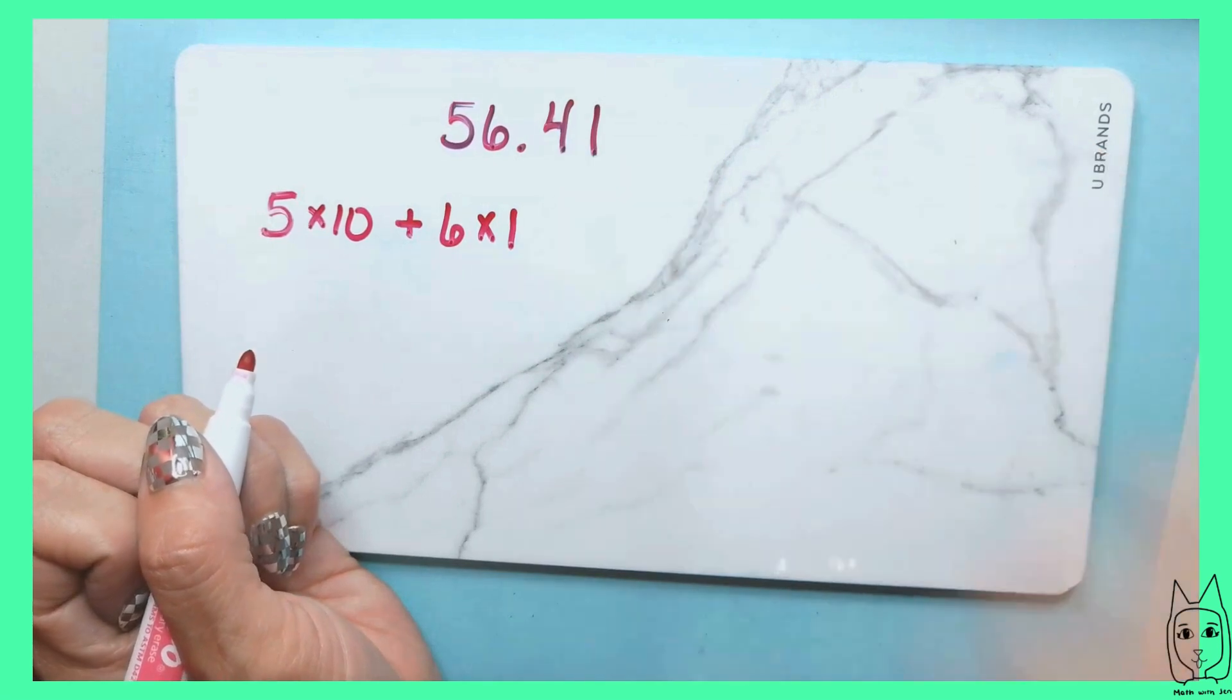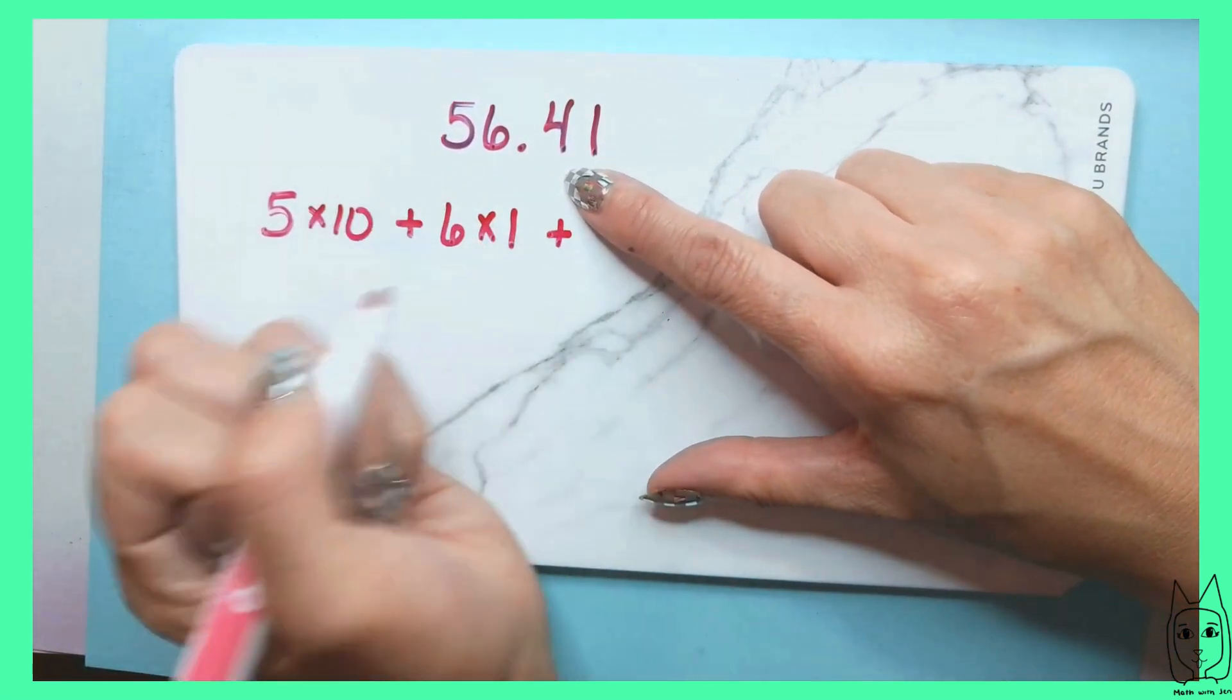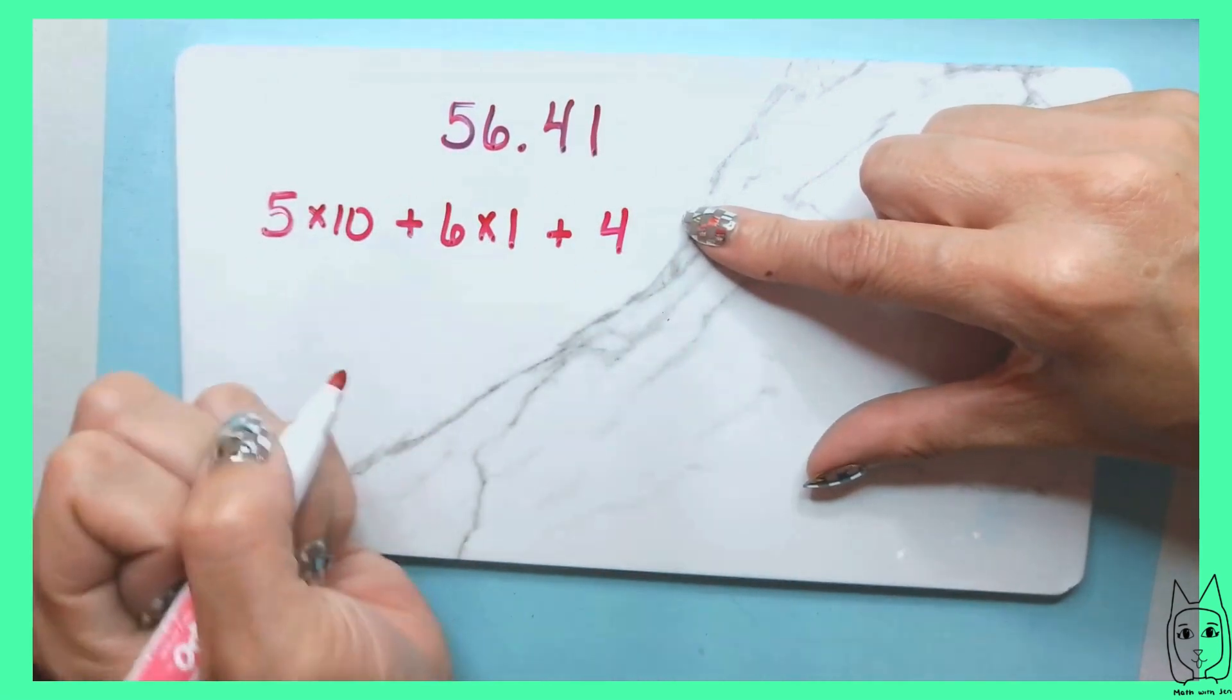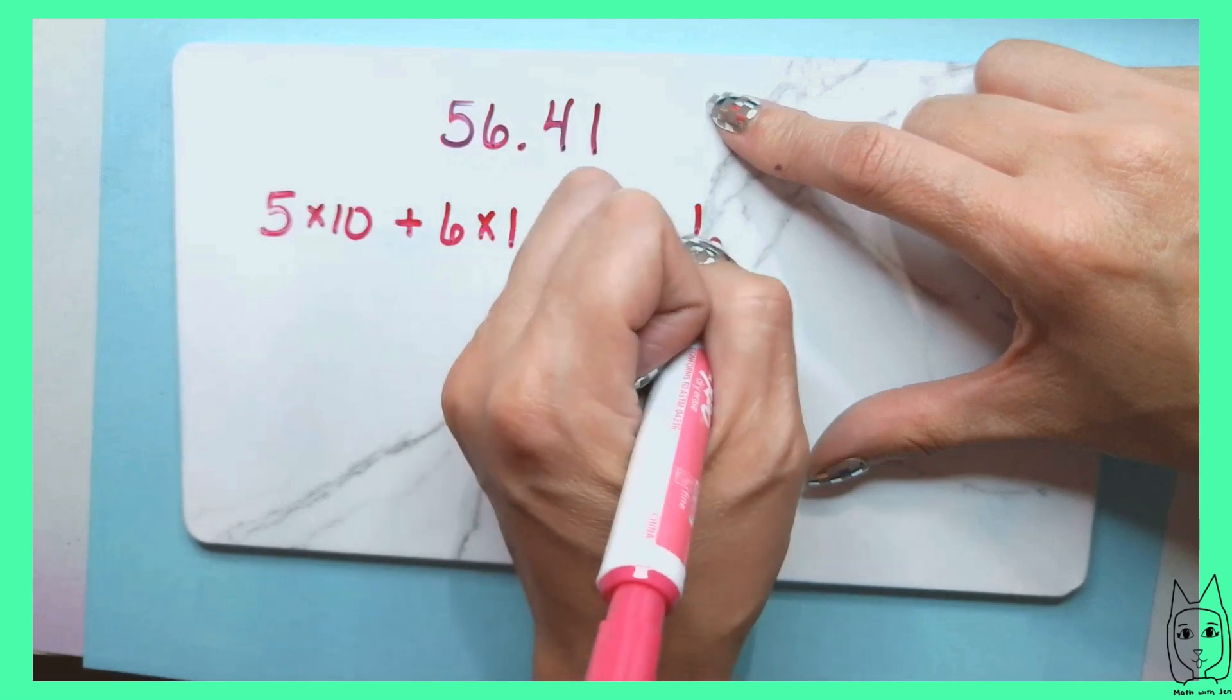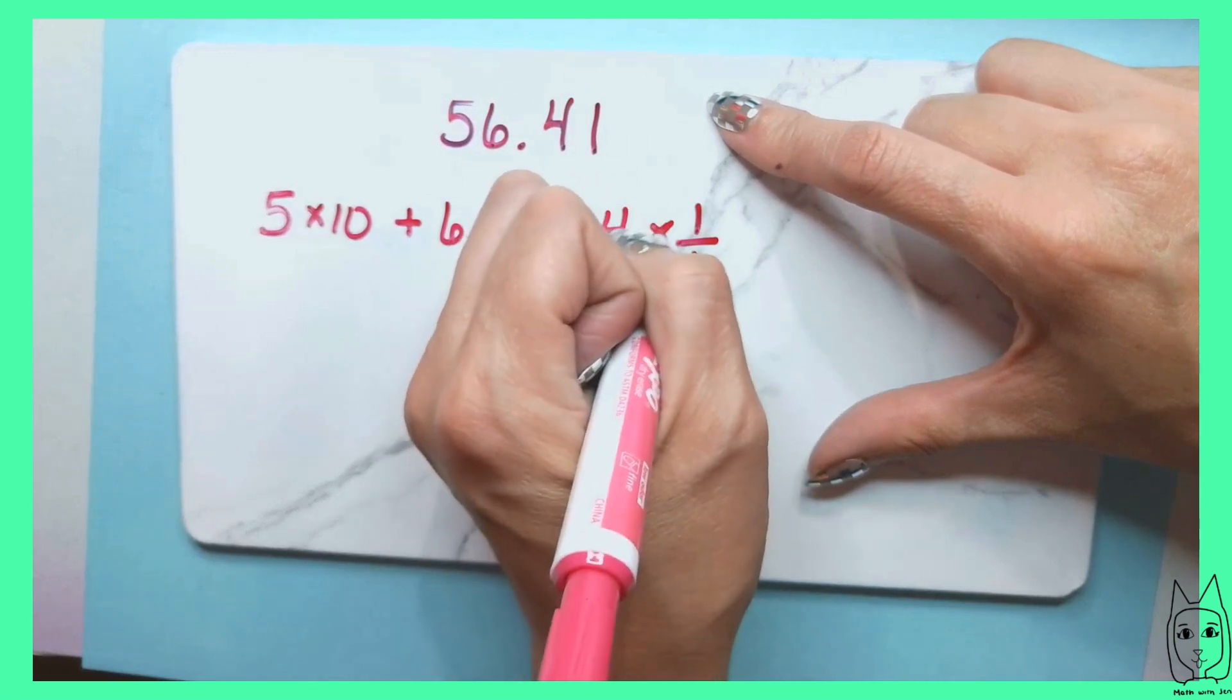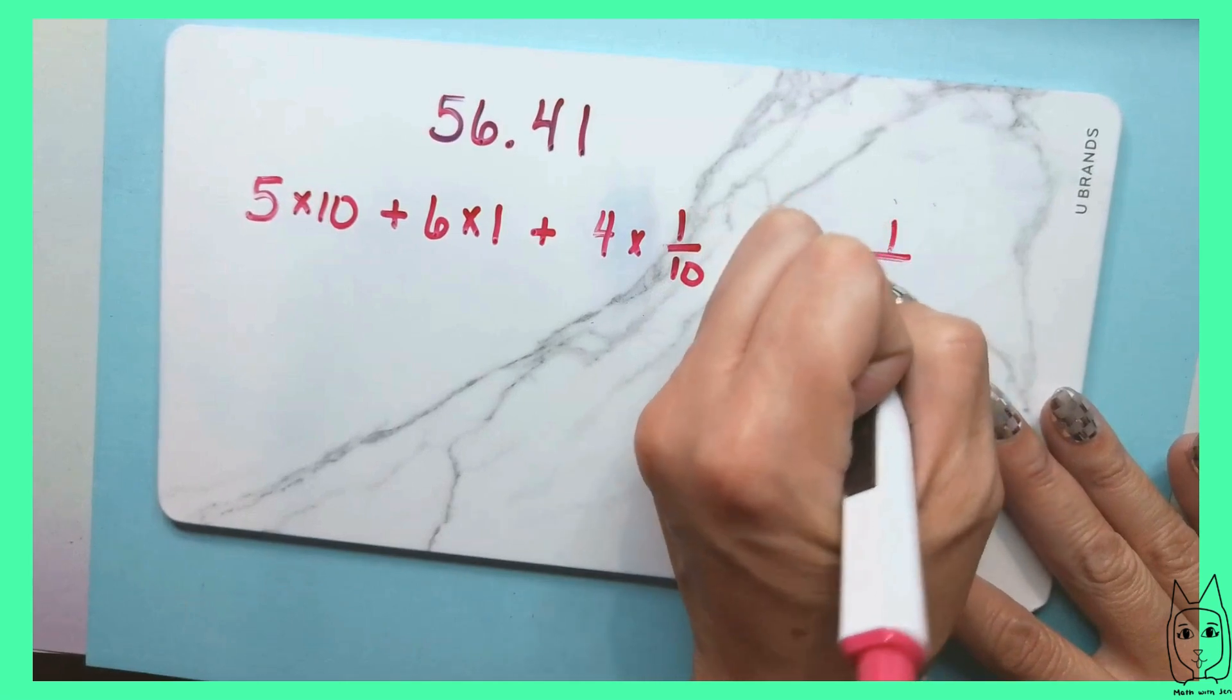Now when we get to the four, again that's the tenths place. So we're going to do plus 4 times one tenth. We are going to do 1 over 10, one tenth. And this would be 1 times 1 over 100.